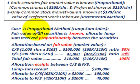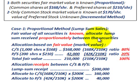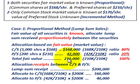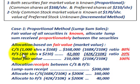Starting with Case 1, the proportional method applies when the fair value of all securities is known, and you allocate the lump sum received proportionately between them. We determine the total fair value: common stock is 1,000 shares at $168 per share, giving a fair value of $168,000. Preferred stock is 200 shares at $210 per share, giving a fair value of $42,000.